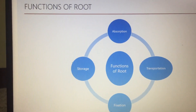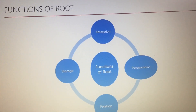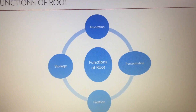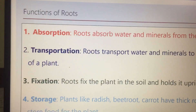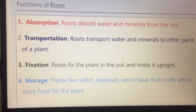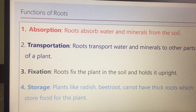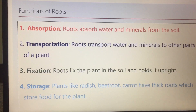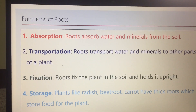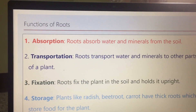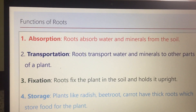Now next is functions of roots. Dear children, we will discuss the four main functions of roots: absorption, transportation, fixation, and storage. First is absorption. Absorption means the roots absorb water and minerals from the soil. Just as we need nutrients for growth, plants also need nutrients for growth, and the roots absorb these from the soil.